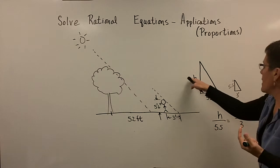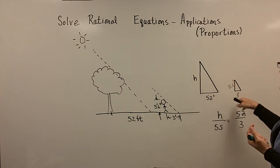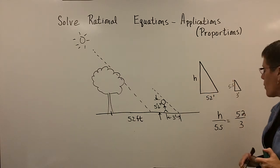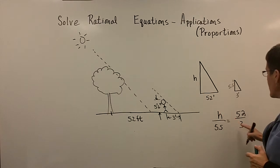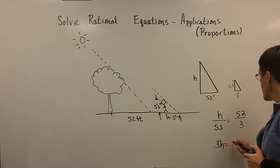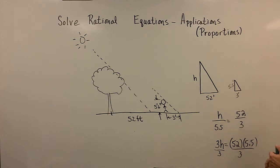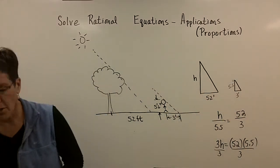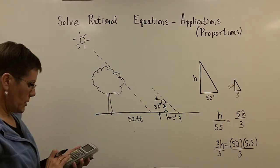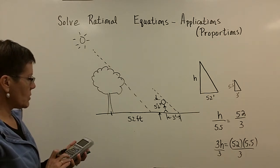I could have written this as h over 52 equals 5.5 over 3. I could have written it 3 times h equals 52 times 5.5. And then I'm going to divide both sides by 3 to find out the height of that tree. And so 52 times the 5.5 is 286.